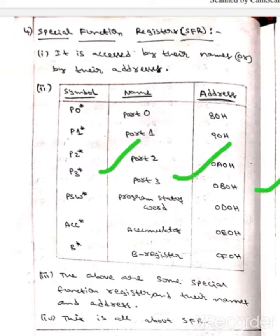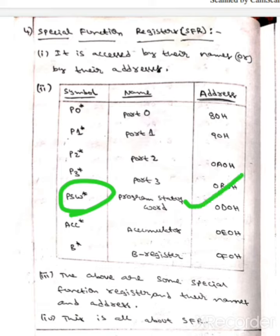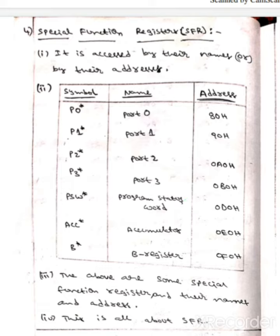The address of P3 star is 0B0H. The next one is PSW star. The name of PSW is Program Status Word, and the address of it is 0D0H.